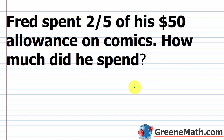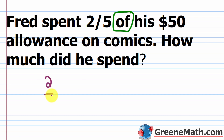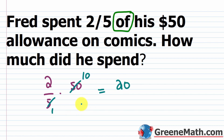Let's look at two quick word problems. Fred spent two-fifths of his fifty dollar allowance on comics. How much did he spend? Multiply two-fifths times fifty: cancel fifty with five — fifty divided by five is ten. Then two times ten equals twenty. Fred spent twenty dollars.